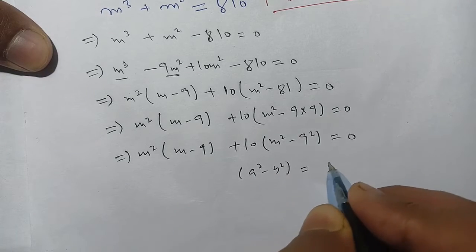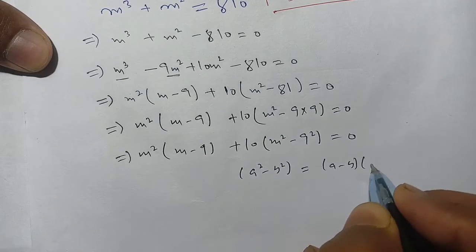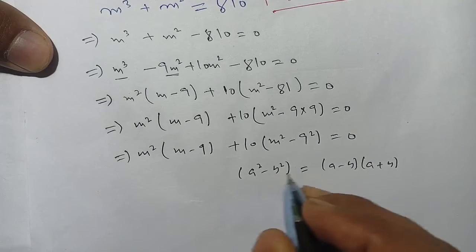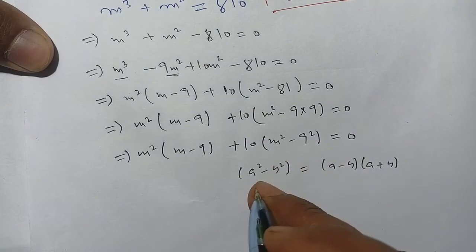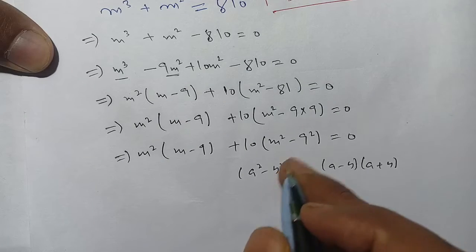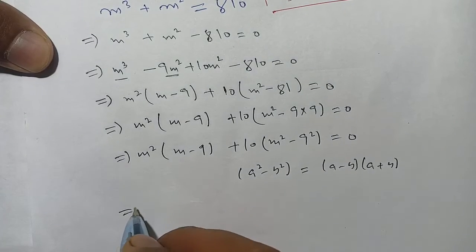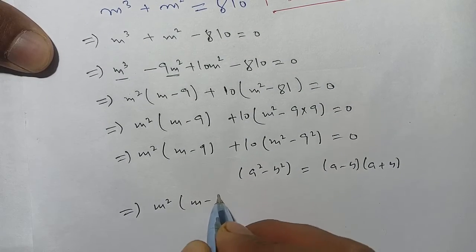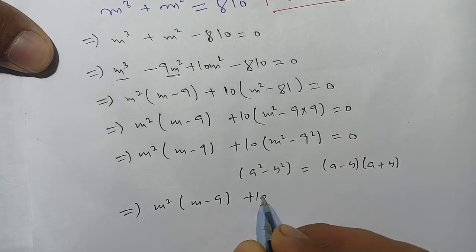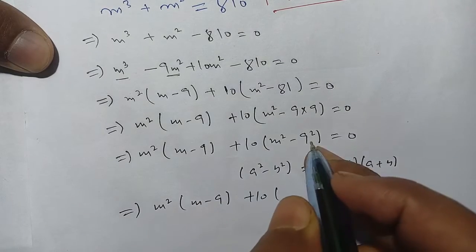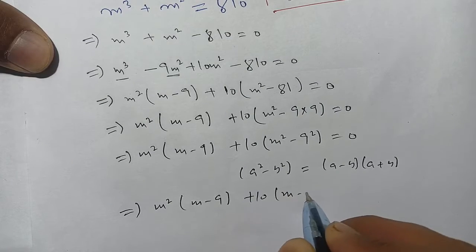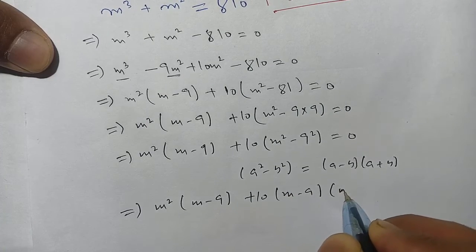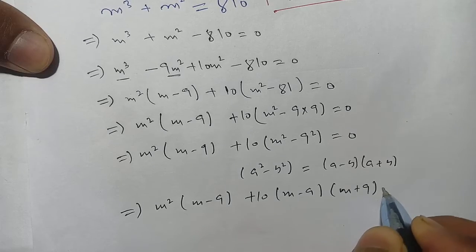We know that a² - b² = (a - b)(a + b). We apply this formula here where a = m and b = 9, giving us m²(m - 9) + 10(m - 9)(m + 9) = 0.